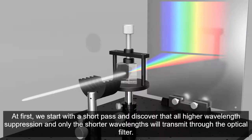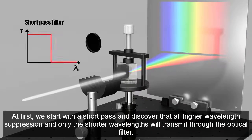At first, we start with a short pass and discover that all higher wavelengths are suppressed and only the shorter wavelengths will transmit through the optical filter.